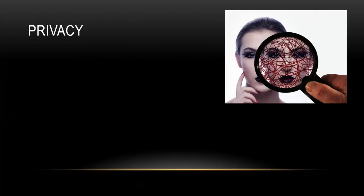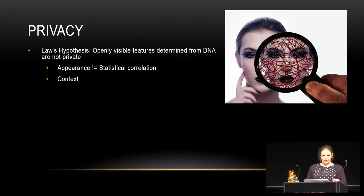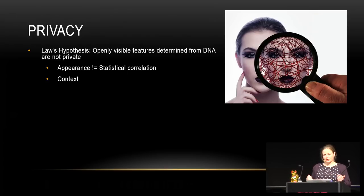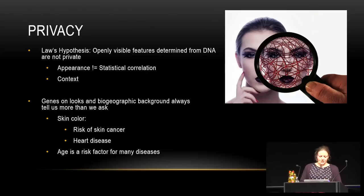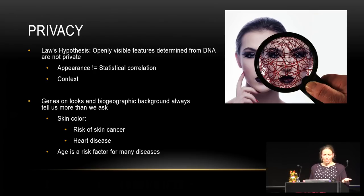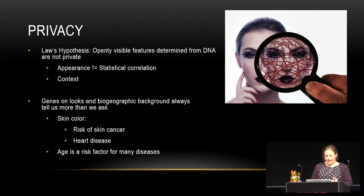There is also a question of privacy. The law's hypothesis is that openly visible features determined from DNA are not private. However, appearance does not equal statistical correlation, and a real witness provides more context — for instance, that a person was fleeing the scene. Additionally, genes for looks and biogeographic background will always reveal more than we ask: fair skin indicates higher risk of skin cancer, darker skin a higher risk of heart disease, and age is a factor for many diseases.